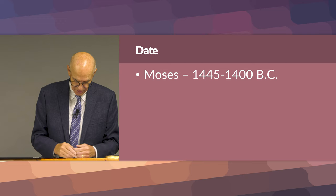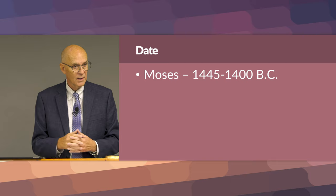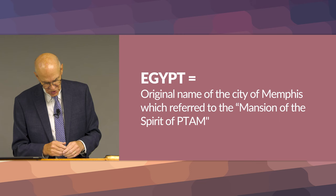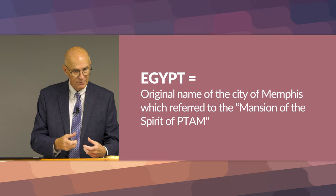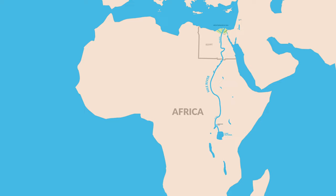A lot of the action takes place in Egypt, so it helps to understand a little about the country of Egypt at that time. The word Egypt referred to the original name of the city of Memphis — not Memphis, Tennessee, but Memphis in Egypt. The original name of the city of Memphis was 'Mansion of the Spirit of Tam,' and the name Egypt comes from the root of that. Egypt is an ancient country in North Africa.